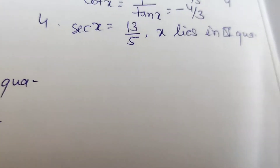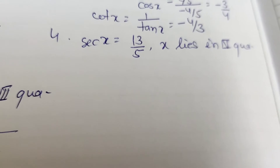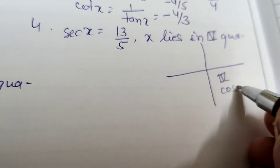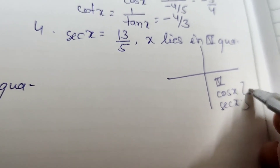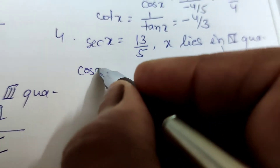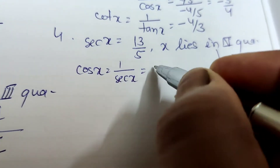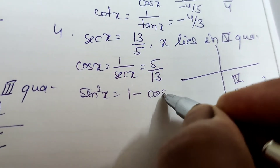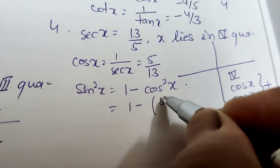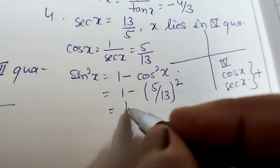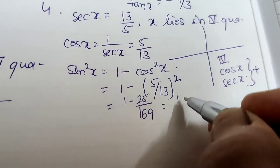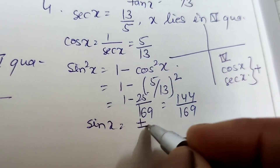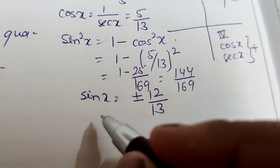Question 4: sec x = 13/5, x lies in the fourth quadrant. In the fourth quadrant, cos x and sec x are positive and all others are negative. Since sec x = 13/5, cos x = 5/13. Using sin²x = 1 - cos²x = 1 - (5/13)² = 1 - 25/169 = 144/169.